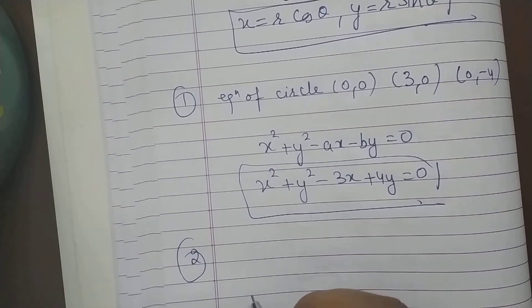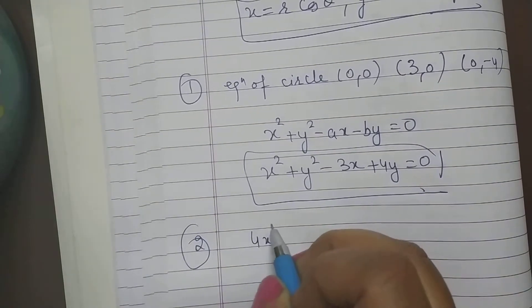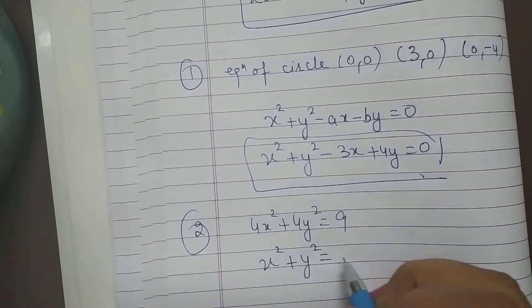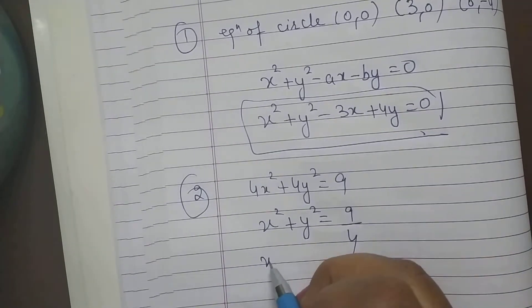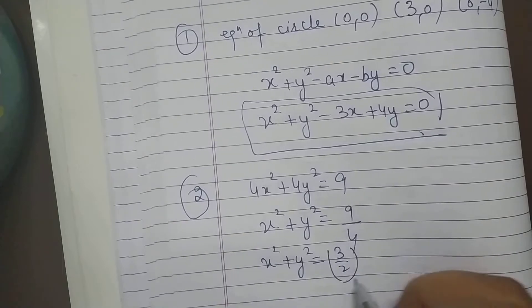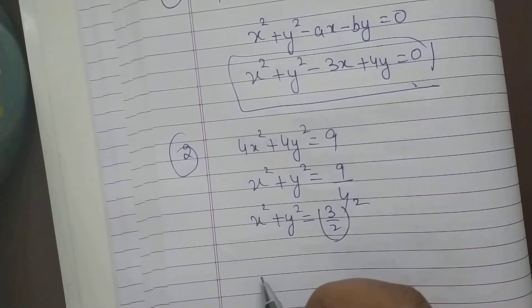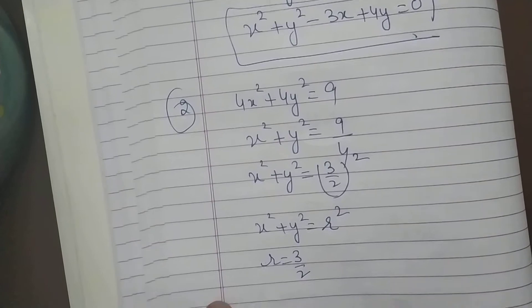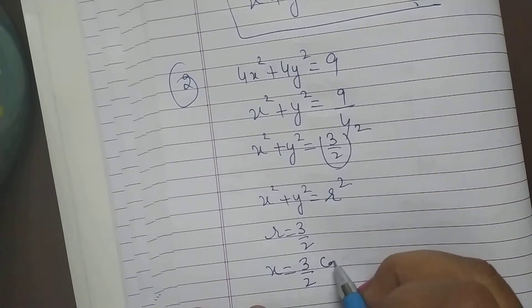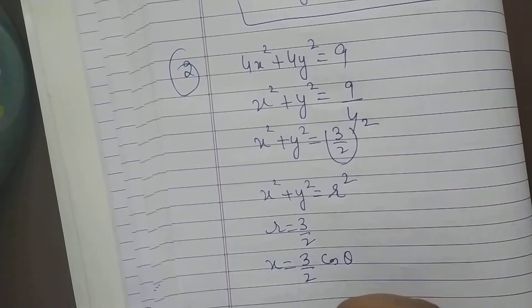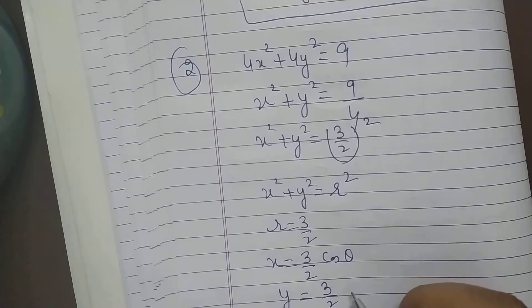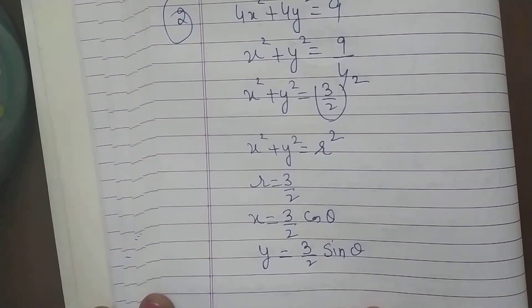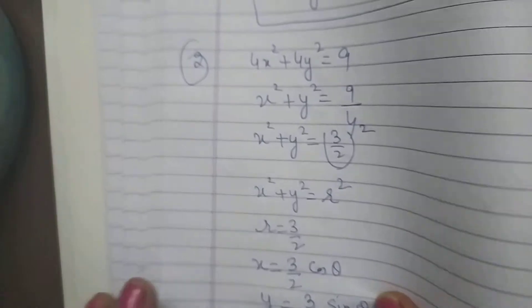Second question: Find the parametric representation of the circle 4x squared plus 4y squared equals 9. Dividing by 4: x squared plus y squared equals 9 by 4, which equals 3 by 2 whole squared. Comparing with x squared plus y squared equals R squared, R equals 3 by 2. So x equals 3 by 2 cos theta and y equals 3 by 2 sin theta. This is your parametric representation.